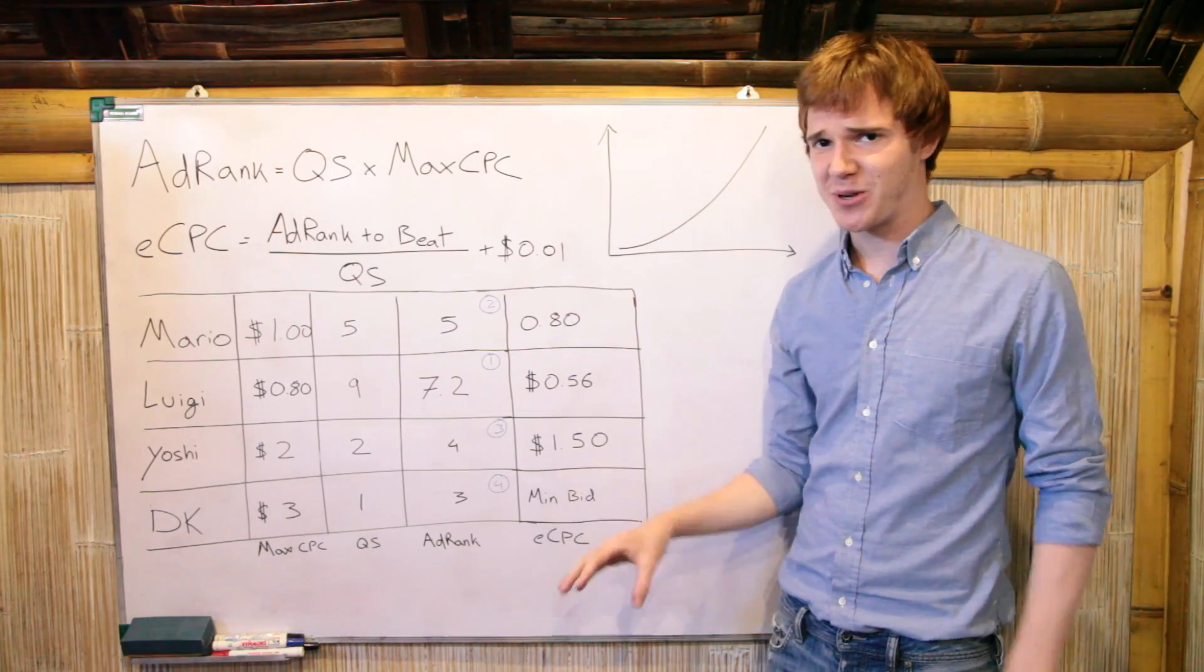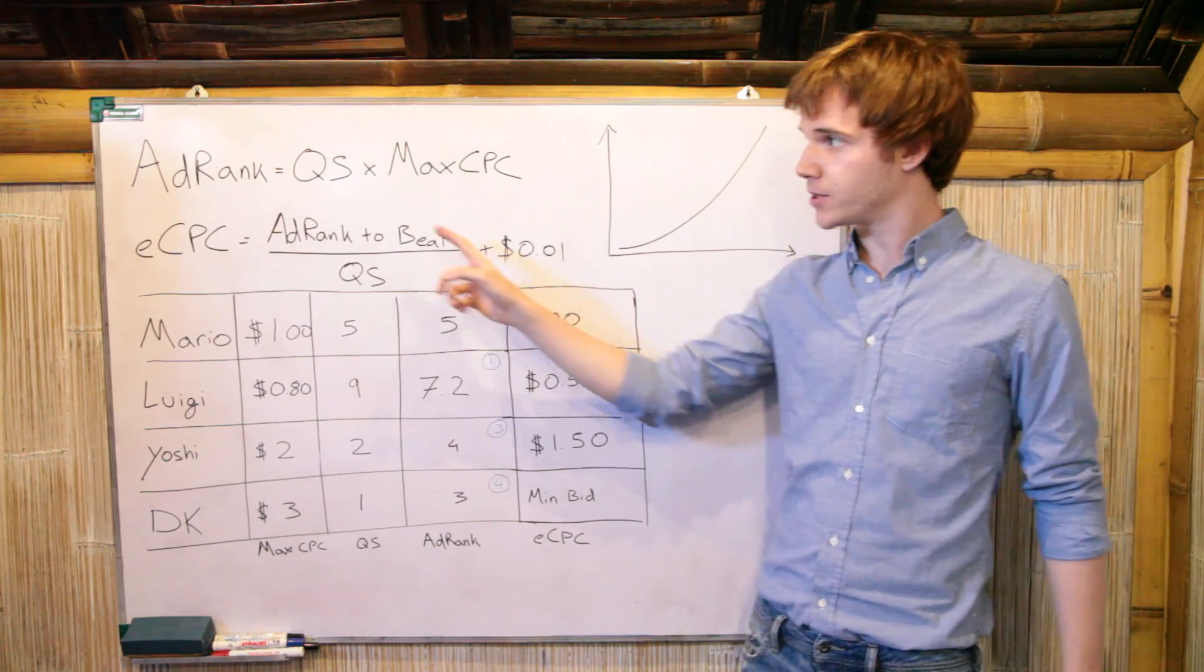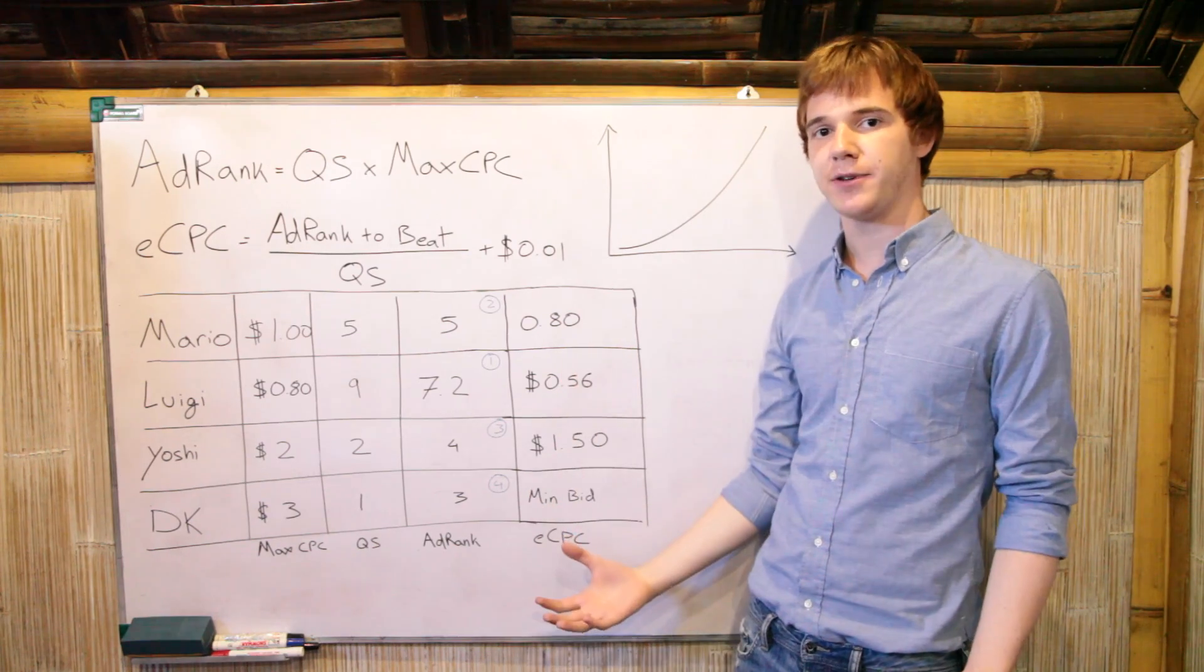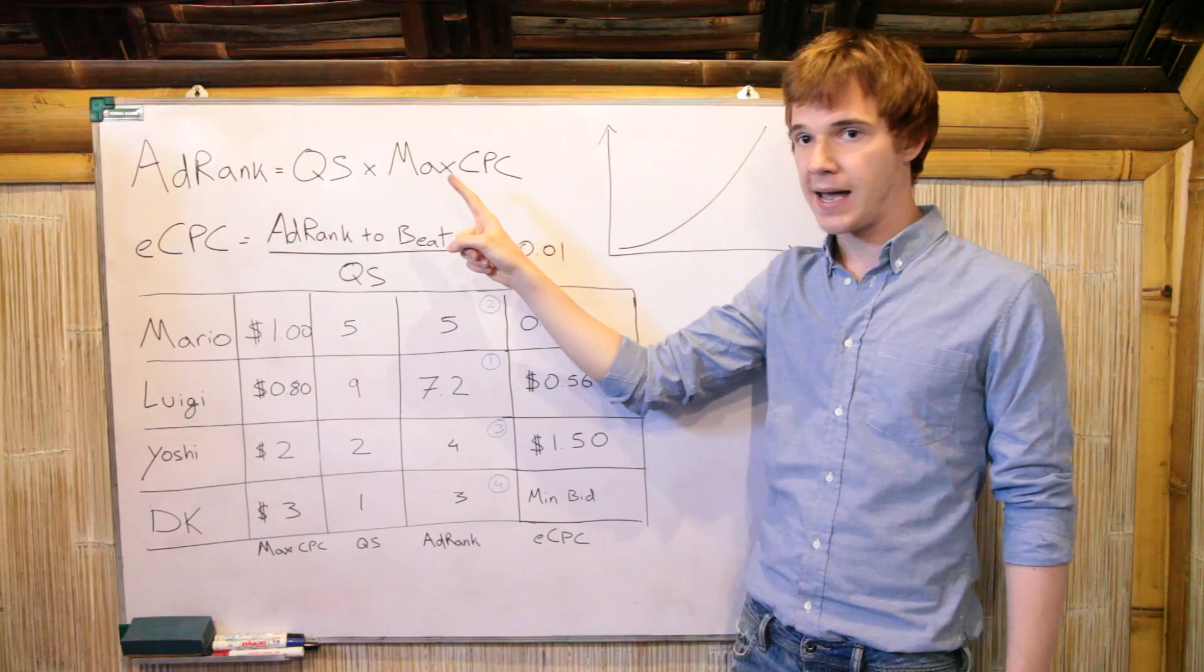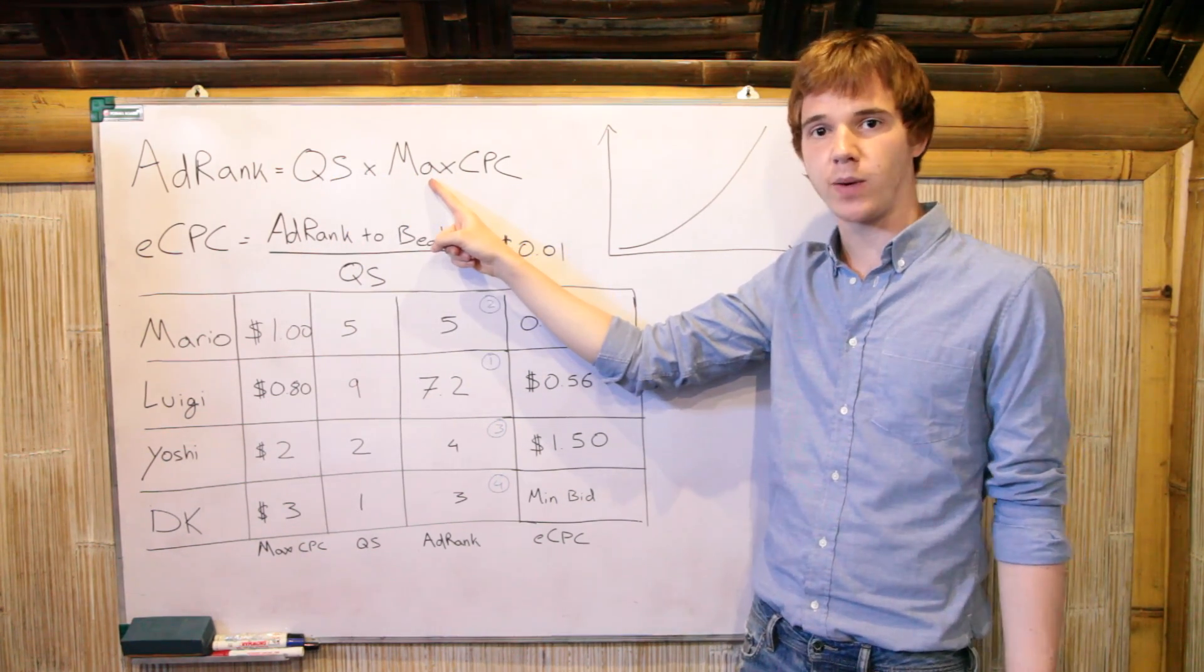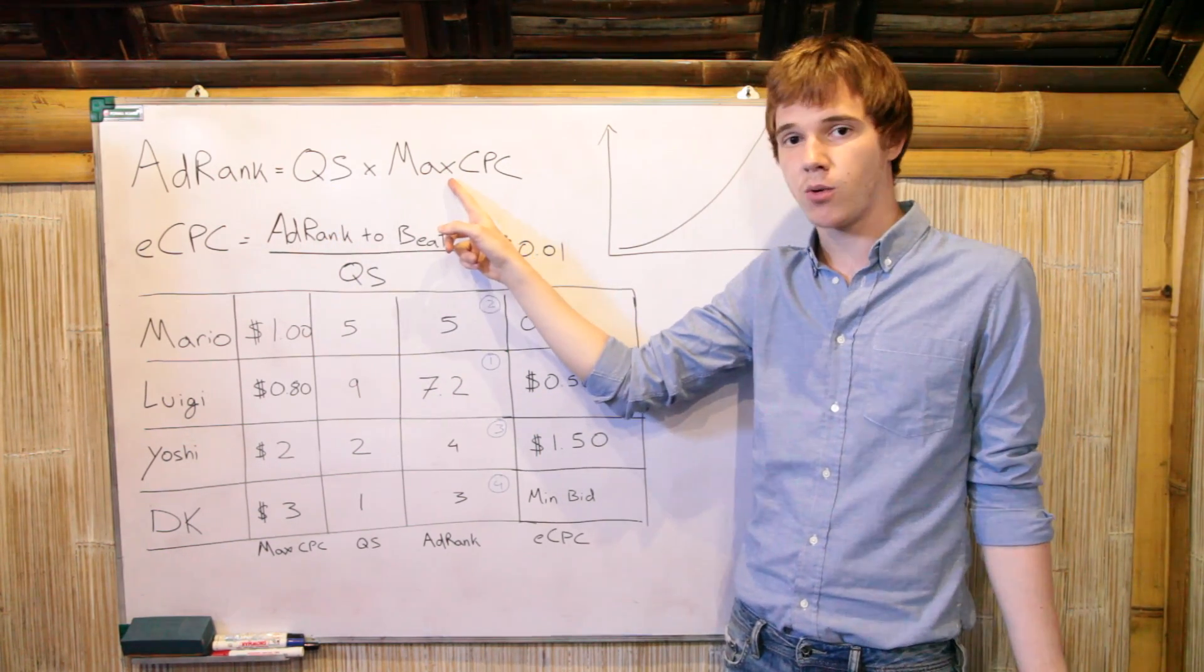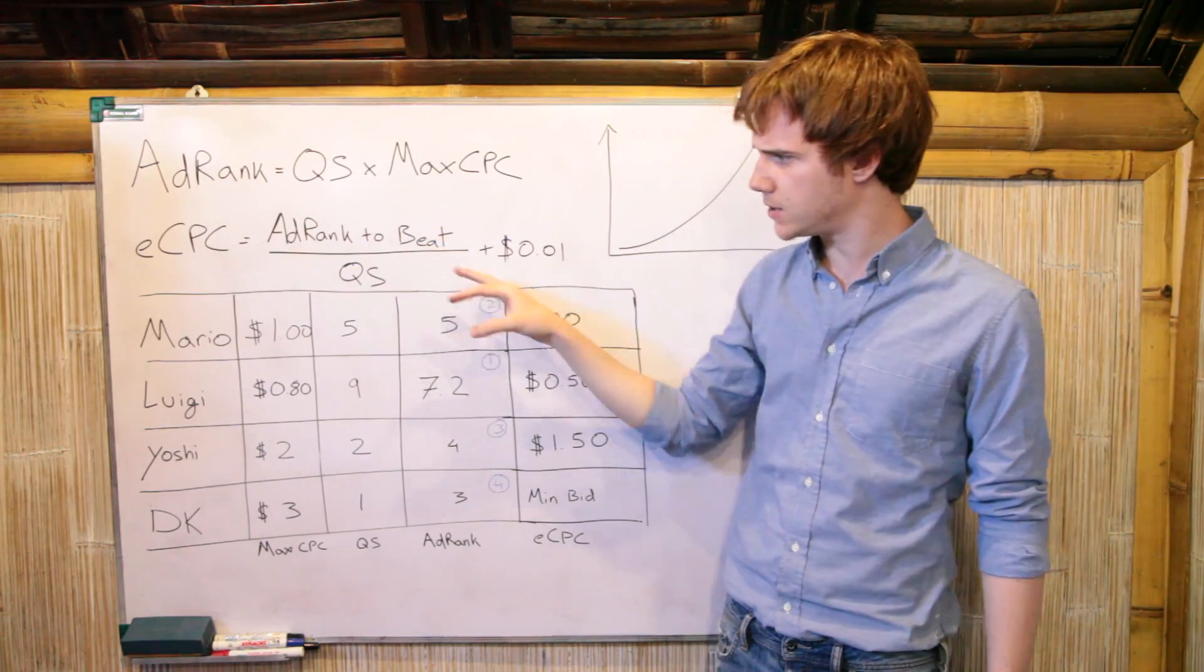So now we're going to get into some real geeky stuff. Don't get too intimidated. I'll walk you through it step by step. Basically in AdWords, there's this thing called AdRank. And what AdRank is, you can think of it as the strength of an advertiser. And it's measured by quality score times your max CPC, i.e. how good your ad is times how much you're willing to pay per click. And so what this means is if you have a high quality score, you can afford to have a lower CPC to get the same AdRank. We're going to see this in just a second.